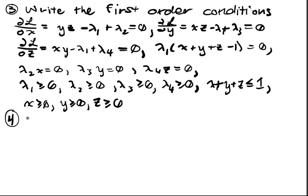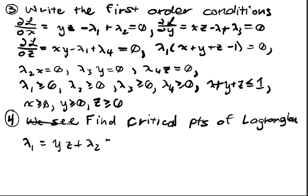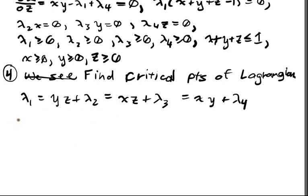Now we solve to find critical points of the Lagrangian. We immediately see from the first-order conditions that they all share the term lambda one, so lambda one equals yz plus lambda two equals xz plus lambda three equals xy plus lambda four. We split into two cases: either lambda one equals zero, or lambda one is greater than zero.